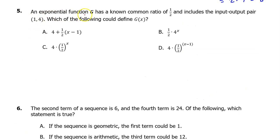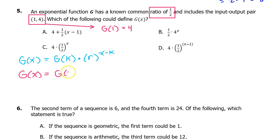Number 5. An exponential function G has a known common ratio of 1/2 and includes the input-output pair (1, 4). Which of the following could define G(x)? We have learned that an exponential function can be modeled by G(x) equals G(k) times r to the (x minus k) power, where G(k) is a known value of the function and r is the common ratio. The input-output pair (1, 4) means that G(1) equals 4. And we are given the common ratio of 1/2. So that means we can write an equation G(x) equals G(1) times (1/2) to the (x minus 1) power. So the answer is D.